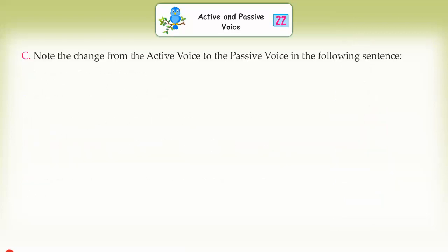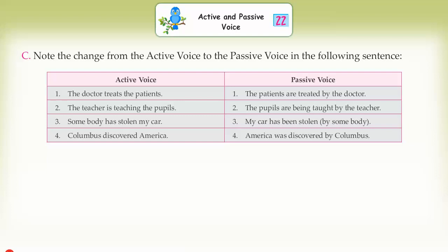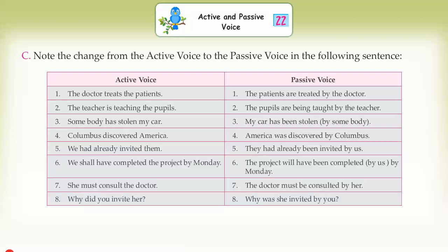Note the change from the active voice to the passive voice in the following sentences. Active: 'The doctor treats the patients.' Passive: 'The patients are treated by the doctor.' Active: 'The teacher is teaching the pupils.' Passive: 'The pupils are being taught by the teacher.' Active: 'Somebody has stolen my car.' Passive: 'My car has been stolen by somebody.' Active: 'Columbus discovered America.' Passive: 'America was discovered by Columbus.' Active: 'We had already invited them.' Passive: 'They had already been invited by us.' Active: 'We shall have completed the project by Monday.' Passive: 'The project will have been completed by us by Monday.' Active: 'She must consult the doctor.' Passive: 'The doctor must be consulted by her.' Active: 'Why did you invite her?' Passive: 'Why was she invited by you?'